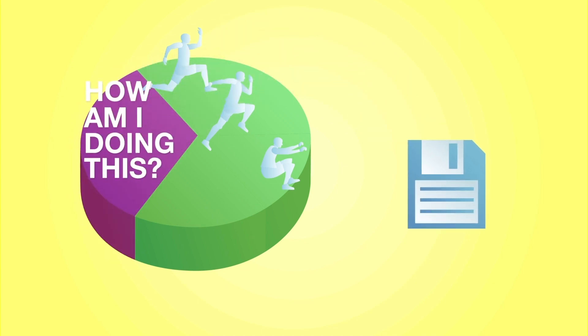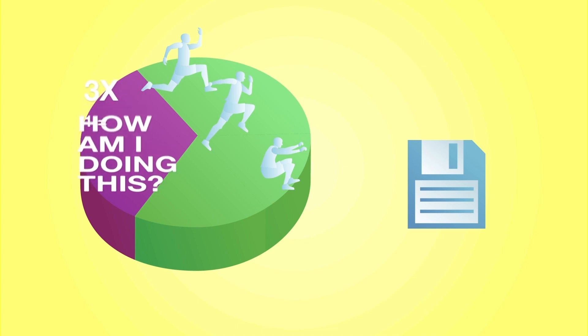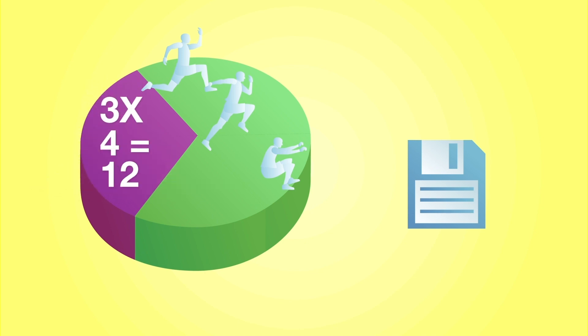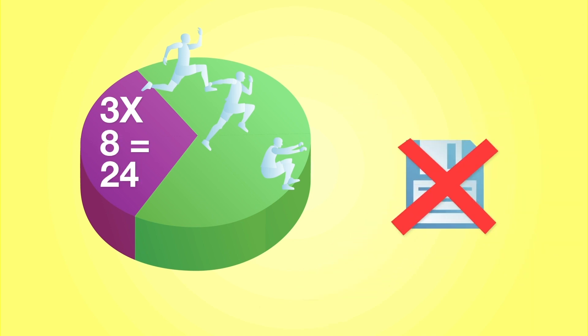When we introduce an attention-demanding secondary task, you're less likely to process the information of the primary motor task consciously. Therefore, you won't be able to store explicit knowledge in your long-term memory.